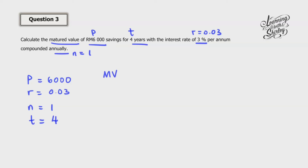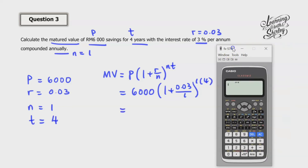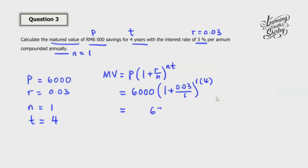To find the matured value we use MV = P(1 + r/n)^(nt): so 6000 times (1 + 0.03/1)^(1×4). Using the calculator: 1 plus 0.03 is 1.03, to the power of 4, then multiply by 6000. The answer is 6753.05 RM, and this is the matured value.